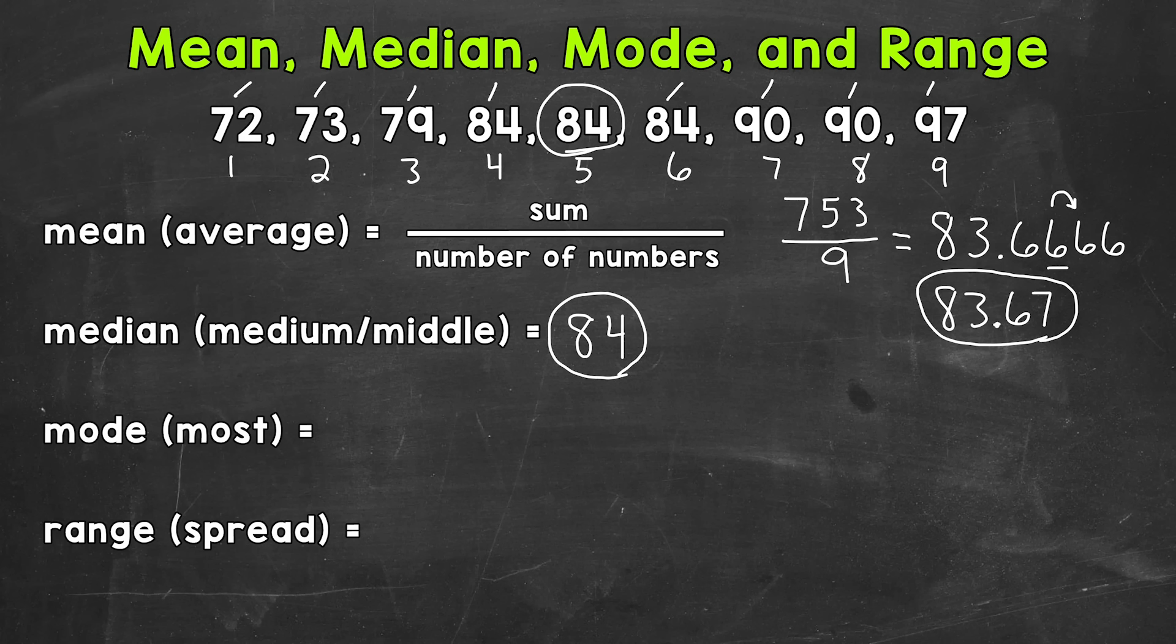Since we have an odd number of numbers within our data set, we're going to have one number sitting in the middle. If we were to have an even number of numbers within our data set, we're going to have two numbers sitting in the middle. If that's the case, find the average between those two numbers. So add them up and then divide by two. If you need more help with median, I added a link down in the description where I have more examples and I have an example of a data set with an even number of numbers.